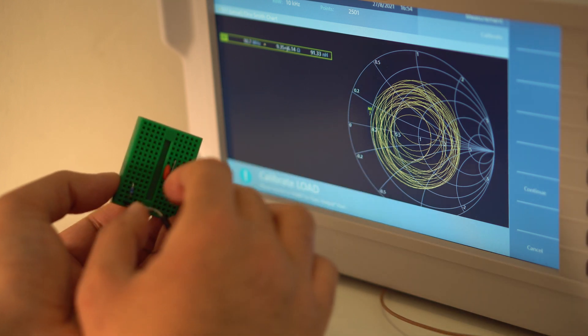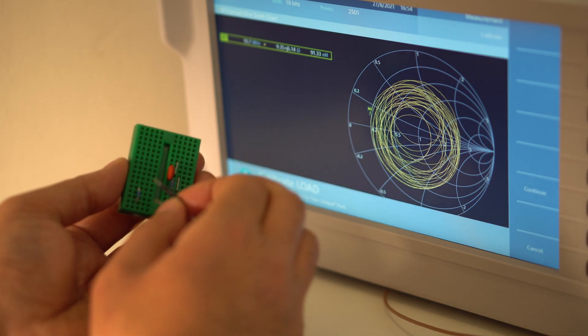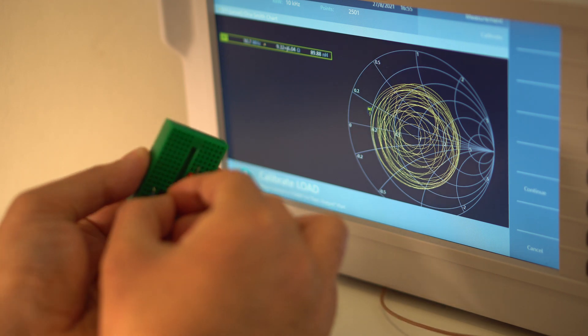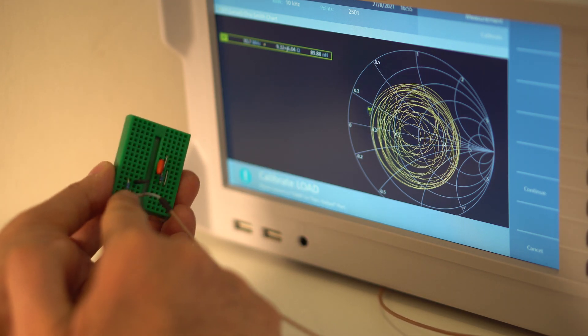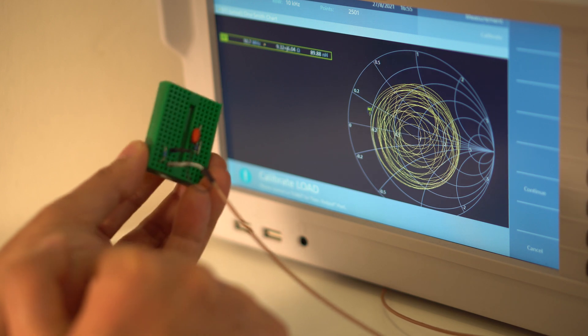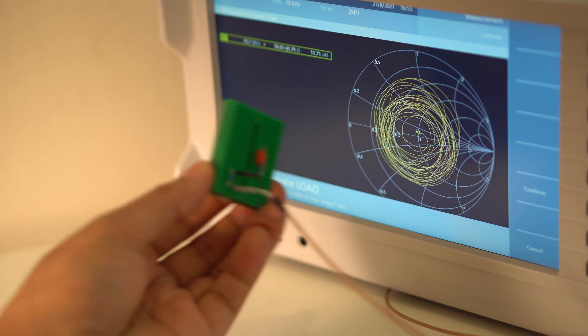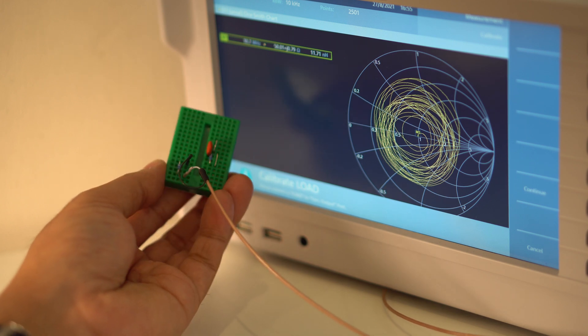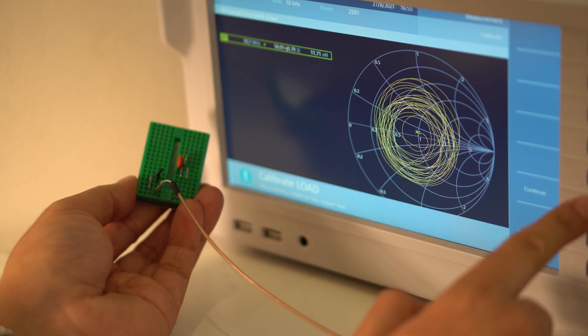Alright and that says calibrate load so what I'm going to do is connect one end to each end of that resistor and it's a 47 ohm, approximately 50 ohm resistor there. Let me try and get that in focus. Okay and then click continue.